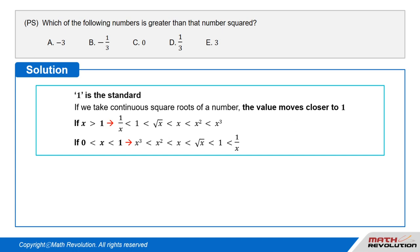And if 0 is smaller than x, which is smaller than 1, then x cubed is smaller than x squared, which is smaller than x, which is smaller than square root of x, which is smaller than 1, which is smaller than 1 over x.